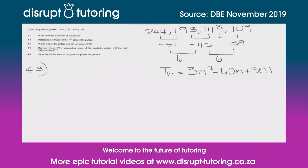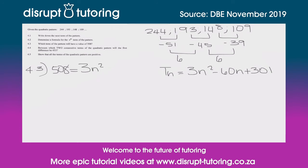The third question specifically asks: which term of the pattern will have a value of 508? So we're going to plug that in — 508 equals 3n squared minus 60n plus 301.